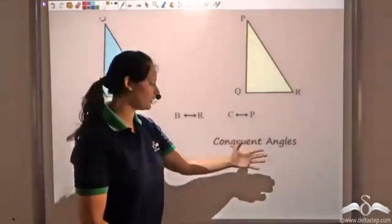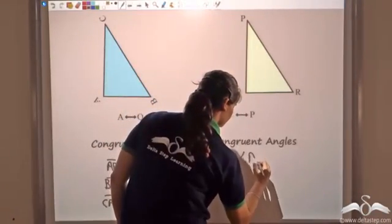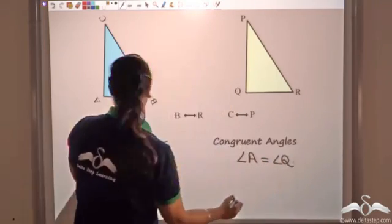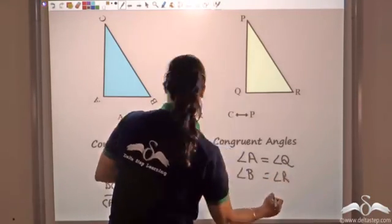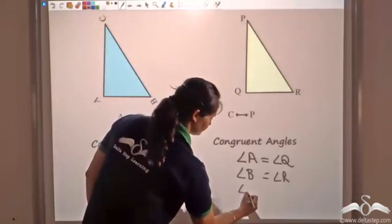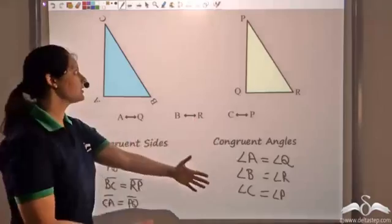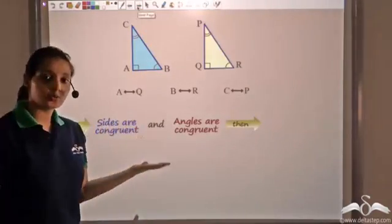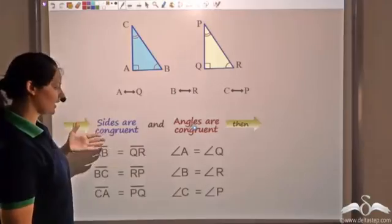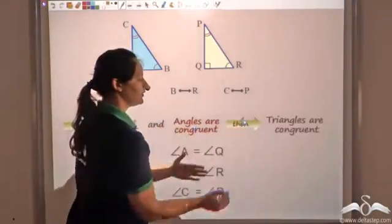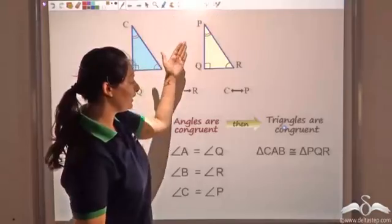These are the congruent sides. Now let us look at the congruent angles: angle A is congruent to angle Q, angle B is congruent to angle R, and angle C is congruent to angle P. So when sides and angles are congruent, we can say the triangles are congruent. These are the three congruent sides and the three congruent angles. If sides are congruent and angles are congruent, then we can say the triangles are congruent, and I can say triangle CAB is congruent to triangle PQR.